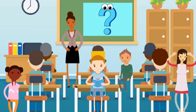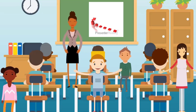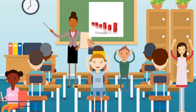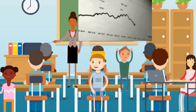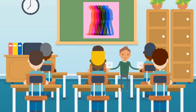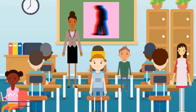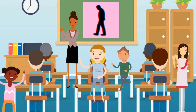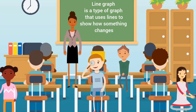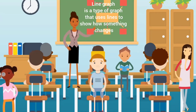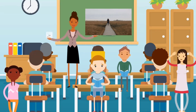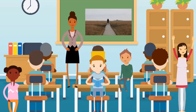Does anyone here know about what a graph is? That's right! A graph is a way to show information or data in a visual form. Today, we'll learn about a specific kind of graph: the line graph. It's used to show how things change over time, like how far a person moves over a certain period. A line graph is a type of graph that uses lines to show how something changes. In our case, we will use it to show distance over time.